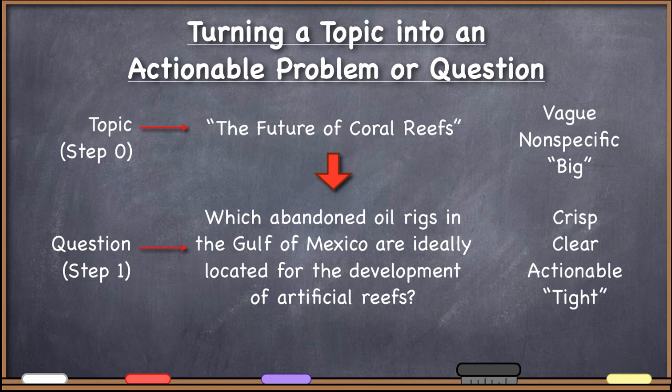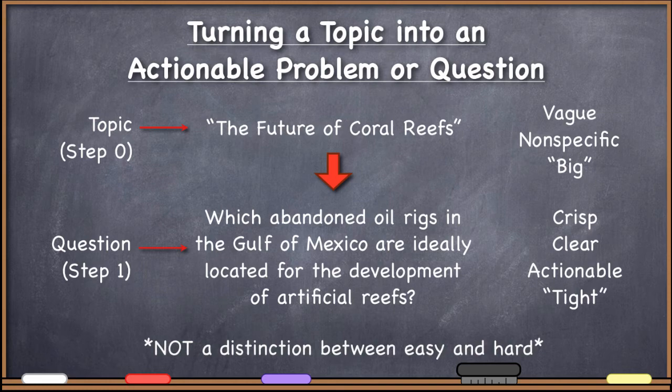You can tell there would be hundreds if not thousands of different questions that would need to be answered in order to address a topic as broad as 'the future of coral reefs.' But 'which abandoned oil rigs in the Gulf of Mexico are ideally located for the development of artificial reefs?' — that is crisp, clear, and we're ready to go. I want to point out that this is not exactly a distinction between easy and hard.